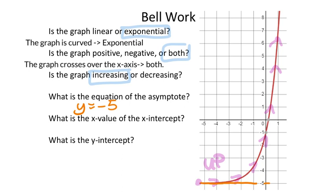Next, it wants the x-value of the x-intercept. This is not an exact value, so we're going to have to estimate. Just to the right it says 1; right in between would be 1.5 or 0.5.